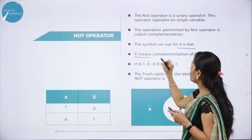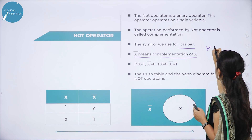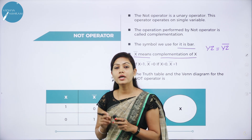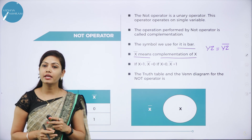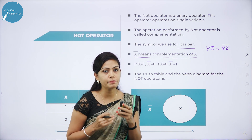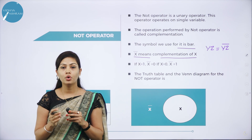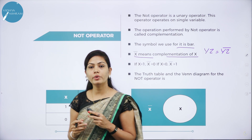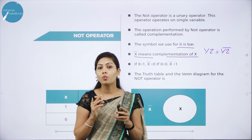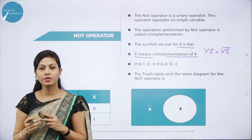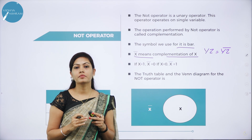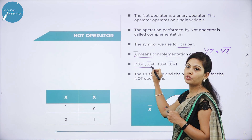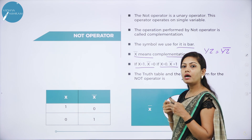The NOT operator operates on a single variable. It is called complementation and the symbol used for it is a bar. For example, x-bar means complementation of x, and yz-bar means the complementation of yz. The variables used in Boolean equations have a unique characteristic: they may assume only one of two possible values — 0 and 1 — where 0 denotes false and 1 denotes true. If x equals 1, then x-bar equals 0. If x equals 0, then x-bar equals 1.